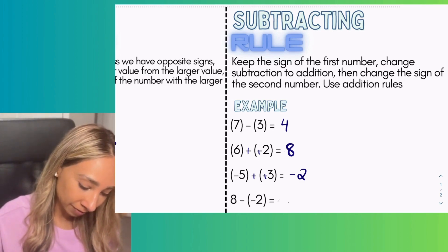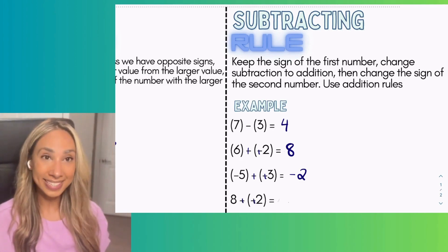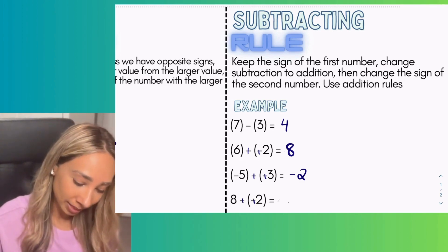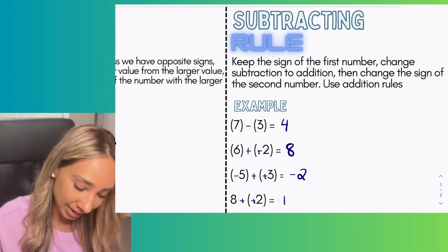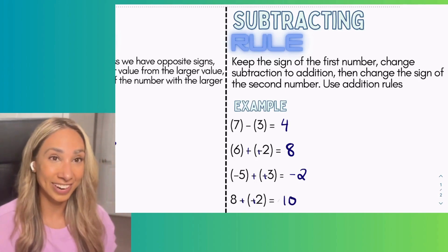In the last subtraction example, we go ahead and flip and flip. That leaves us with positive ten.